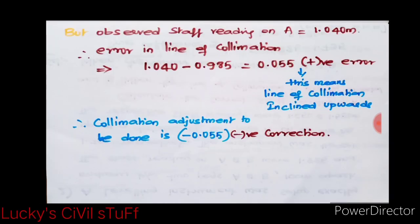But the observed staff reading at A when the instrument was at B was 1.040 meters. Because of the staff reading at A being far end when the instrument was set up at B, there will be a collimation error at peg A.